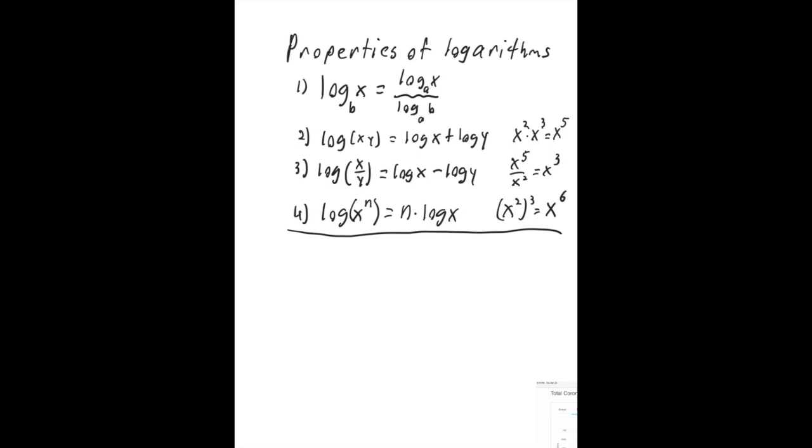The first one is the change of base formula that we looked at last time. So let's do a quick example of that. Let's say you have 6 times log base 5 of 11. And as we talked about previously, on your calculator you should have logs for base 10 and log for base e. So we'll use the change of base formula here. I'll just change this to log base 10.